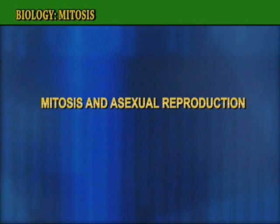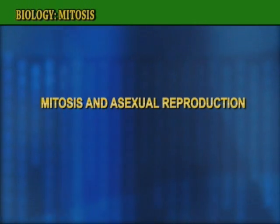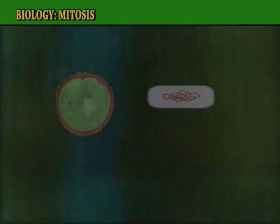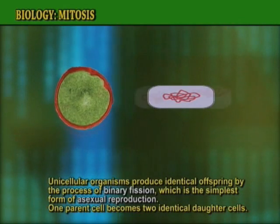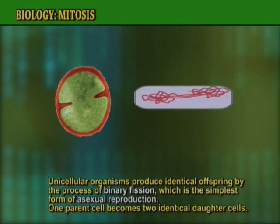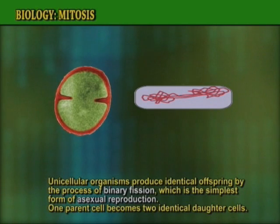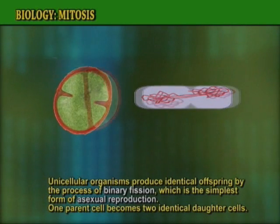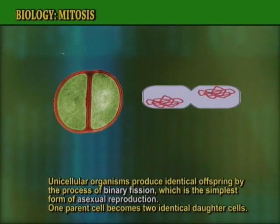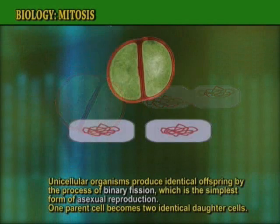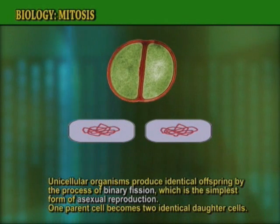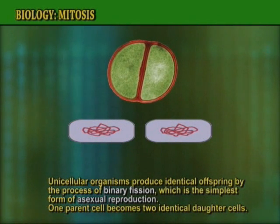Mitosis and Asexual Reproduction. Unicellular organisms produce identical offspring by the process of binary fission, which is the simplest form of asexual reproduction. One parent cell becomes two identical daughter cells.